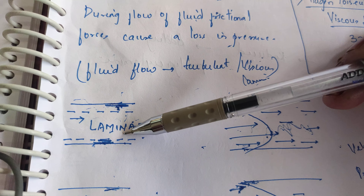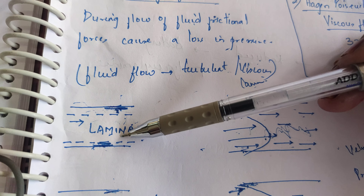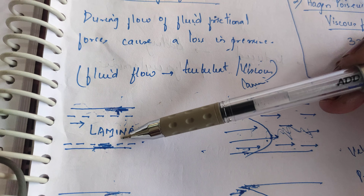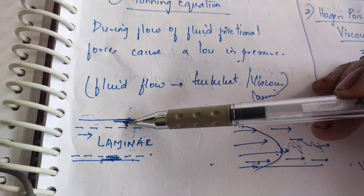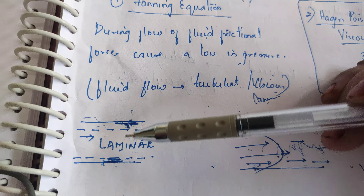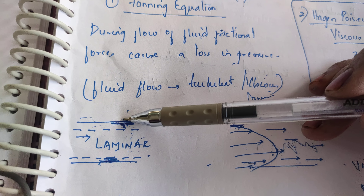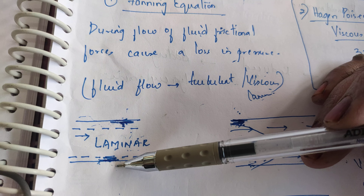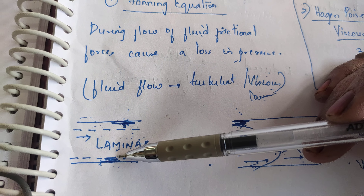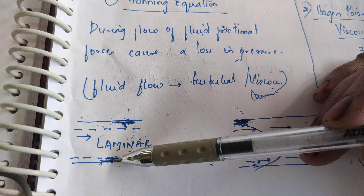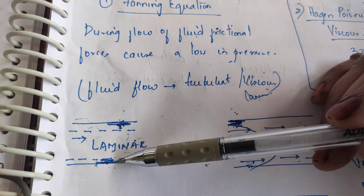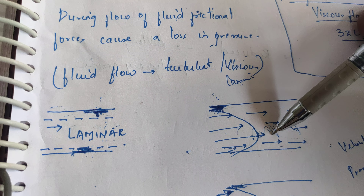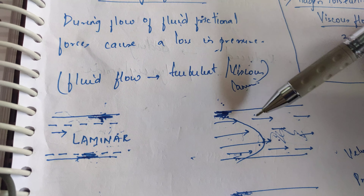In a pipeline where fluid is flowing in laminar flow — that is, the fluid is flowing in a proper steady state — the layers of liquid near the wall of the pipeline experience frictional forces. Due to that friction, the velocity of those layers will be reduced and the pressure will also get reduced.